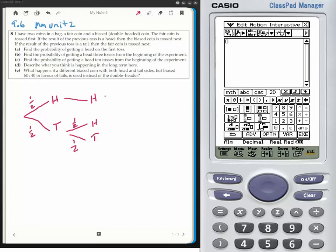On the third attempt, if I get a head, I'm going to just toss my biased coin and get a head. If I get a head, I'm just going to toss my biased coin and get a head. If I get a tail, I'm going to toss my fair coin and get a head or I'll get a tail.